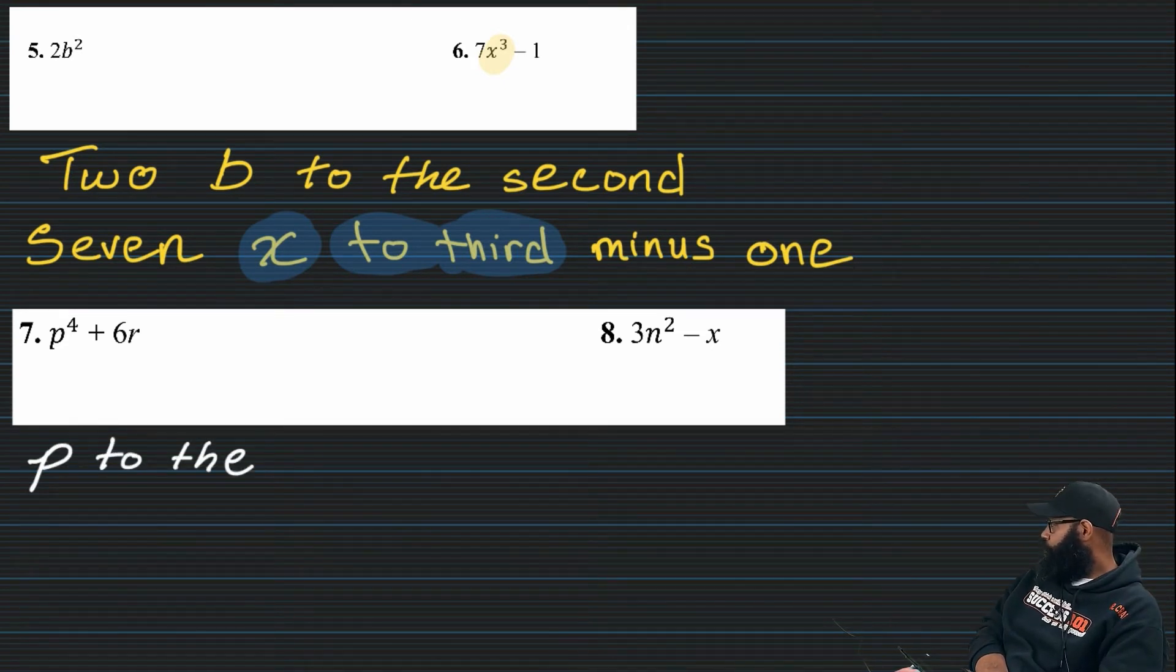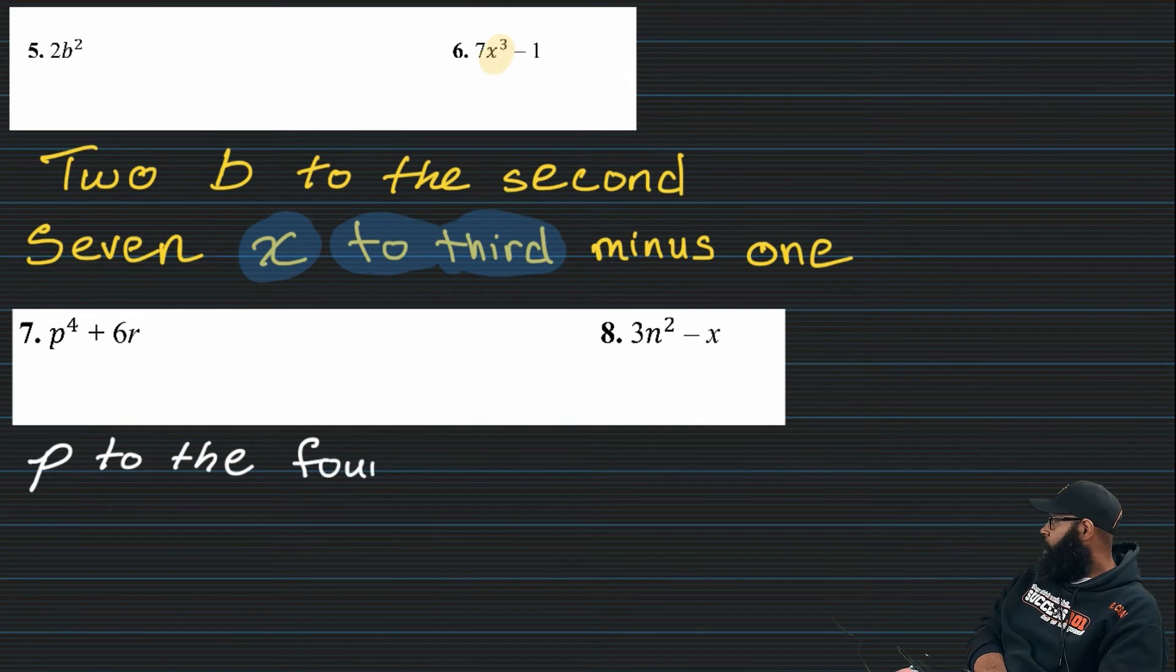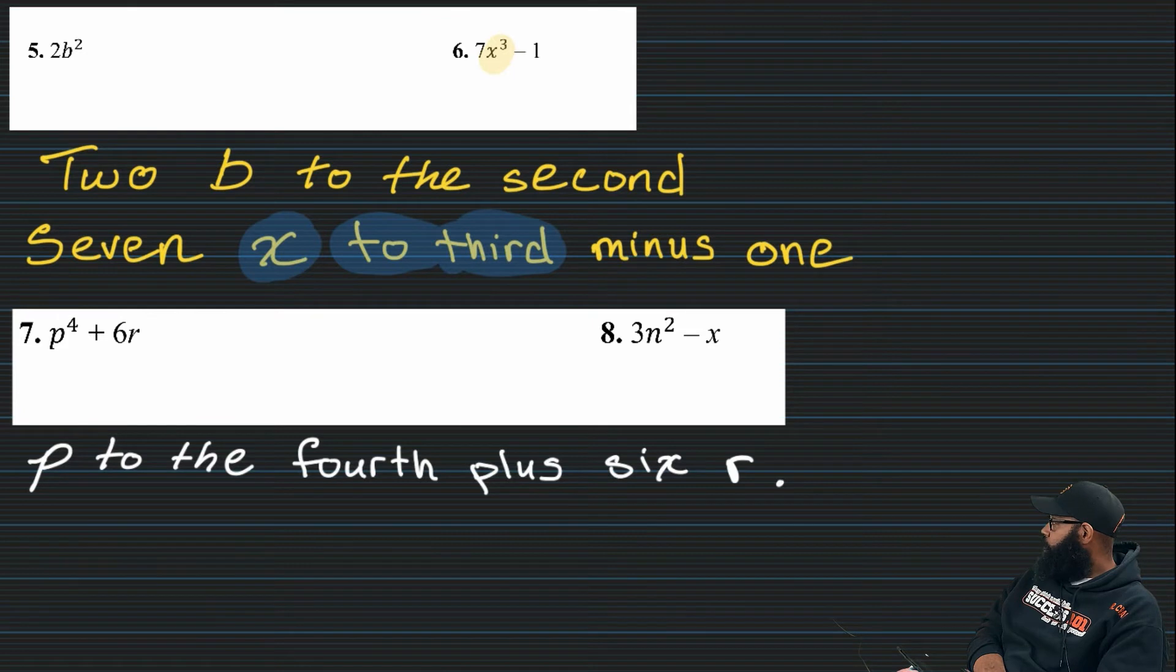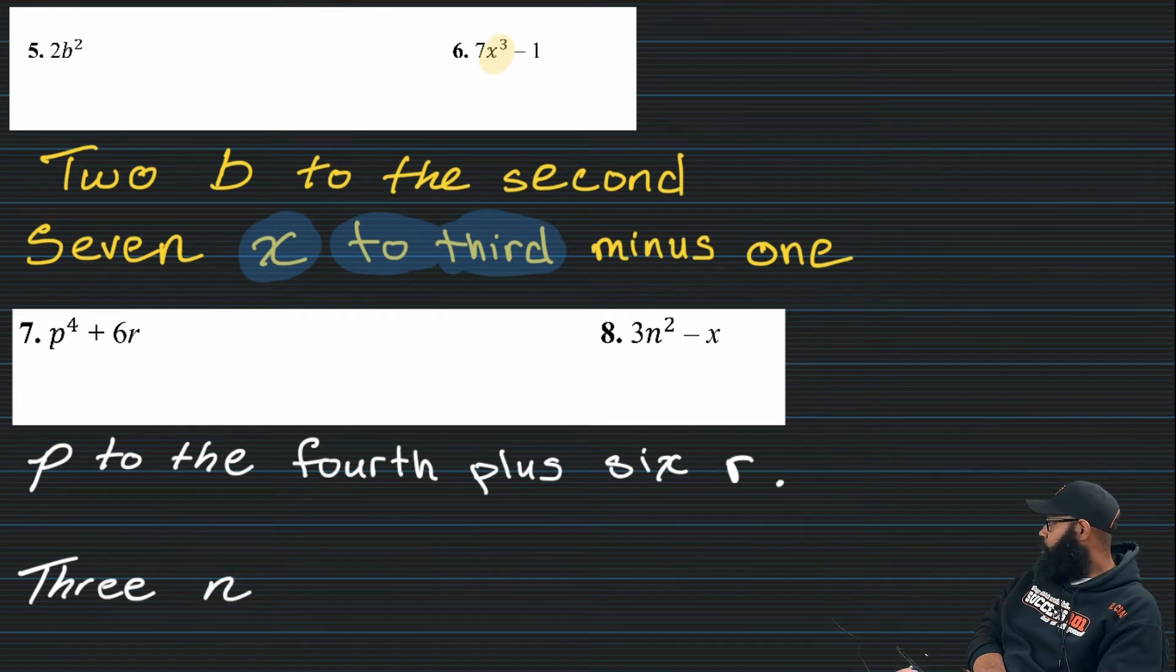P to the fourth. Operation is plus. If you want to use a different word, keep it simple smarty. Six R. And I'm not sure if there's any vocabulary I want to highlight or terms in that.